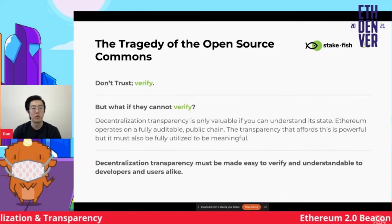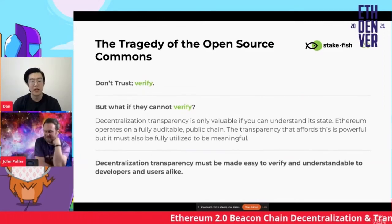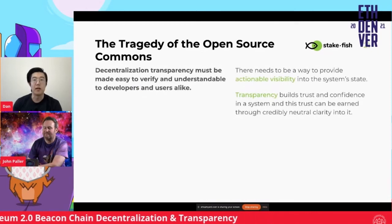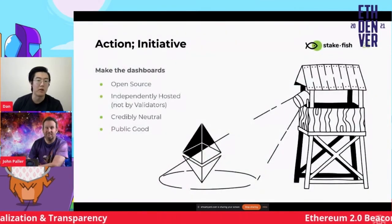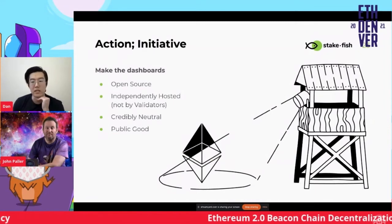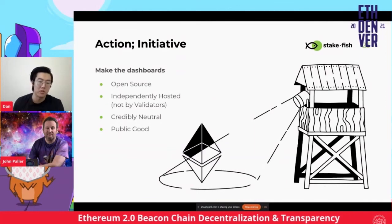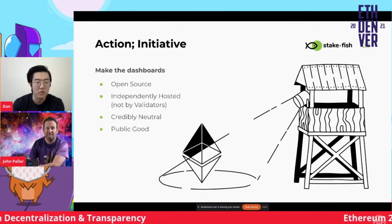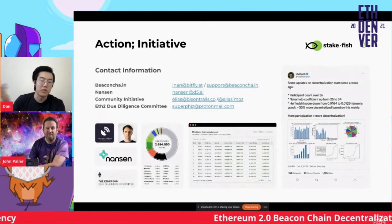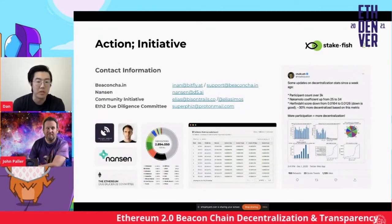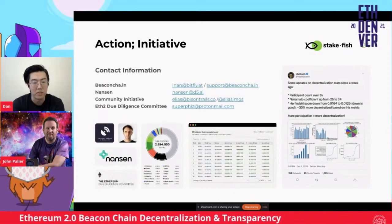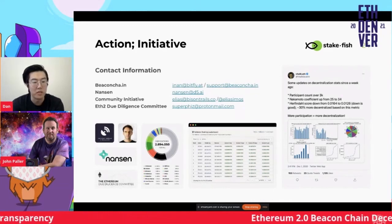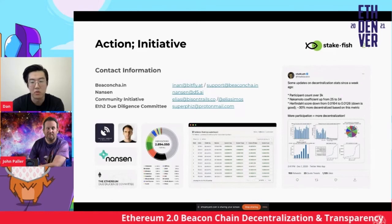Most people can't verify things themselves, and this type of decentralization must be easy to verify and understandable. There are initiatives that need to have dashboards that are open source and independently hosted — especially not by validators or validator service providers like Steakfish — so there's no conflict of interest. They need to be credibly neutral and treated as public goods. Beacon Chain is developing some dashboards to support this; Nansen is as well; there are community initiatives that Elias from Bison Trails is doing; and Superfizz from the ETH2 due diligence committee is also spearheading a lot of this coordination.